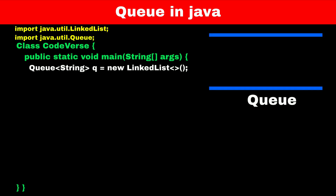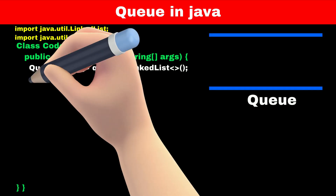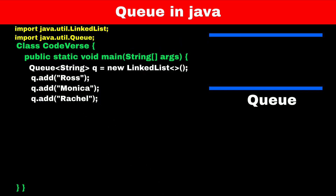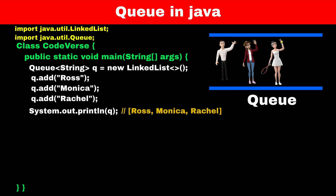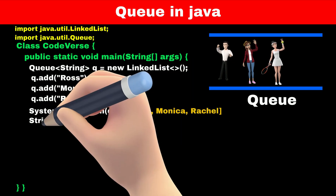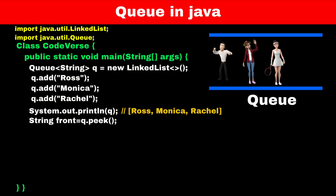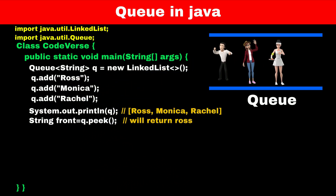Let's assume we got an order from Ross, Monica, and Rachel, so we will add them into the queue. We can use the add function to add elements into the queue. If you print the queue, you will find that Ross is at the front. You can also use the peek function to check who is at the front of the queue.